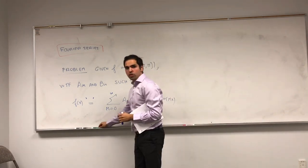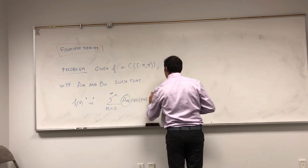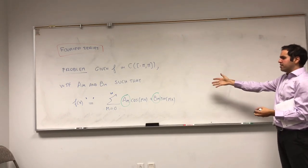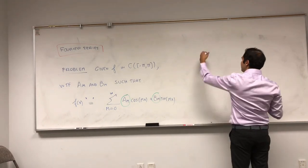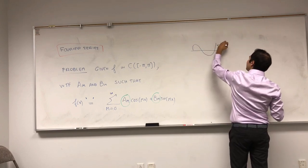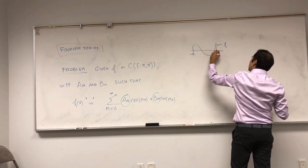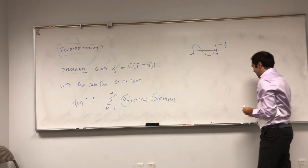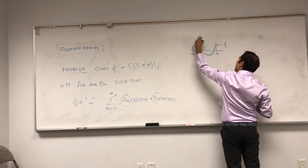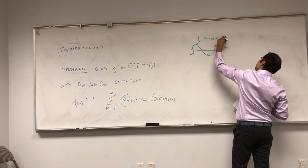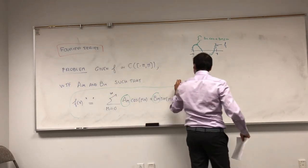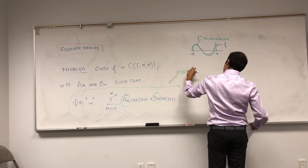In other words, we want to find coefficients am and bm such that any function continuous from minus pi to pi can be written as a series of cosines and sines. We want to approximate f on minus pi to pi with squiggly lines — sums of am cosine plus bm sine. This is so important it's called the Fourier series.